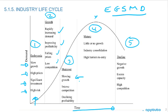When we get into the shakeout, growth is slowing, there's intense competition — that's why it's called shakeout — and profitability is declining. When you've got intense competition, you're going to have declining profitability, so there's pressure on prices as well.